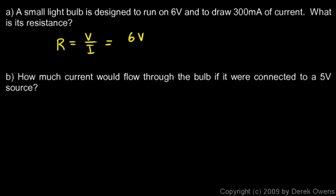Resistance is voltage over current, or R equals V over I. And we have 6 volts over 300 milliamps. 300 milliamps is 0.3 amps. And 6 divided by 0.3 is 20. And when we divide volts per amp, we get 20 ohms. So that's the resistance of this light bulb, 20 ohms.